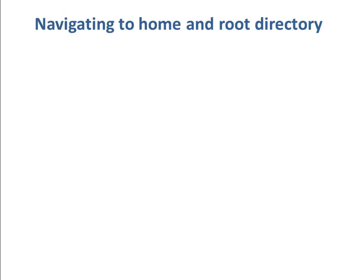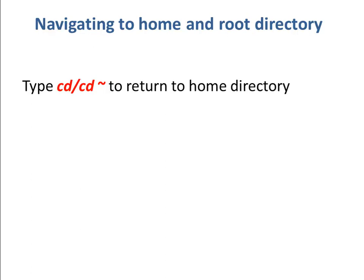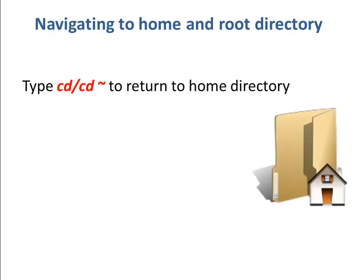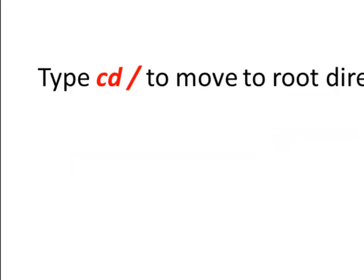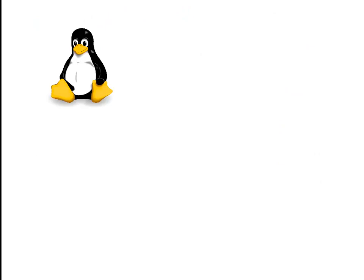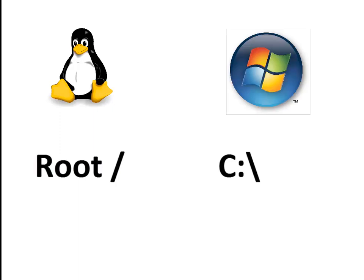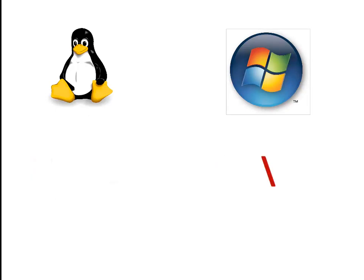If you want to navigate to the home directory, then you need to type cd or cd space tilde. In case you want to move to the root directory, you would have to type cd space forward slash. It should be noted here that the root of the file system in Linux is denoted by a forward slash, which is the same as C:\ in Windows. The apparent difference is in Windows where you use a backward slash, while in Unix or Linux a forward slash is used. Let us try the same on terminal.